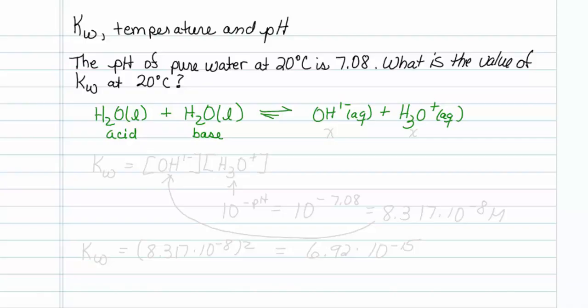Now, notice that the stoichiometry of hydroxide to hydronium is 1 to 1. So if I could get either one of these concentrations, the kW of the water would be equal to the concentration of hydroxide times the concentration of hydronium. So I just need either one of these.